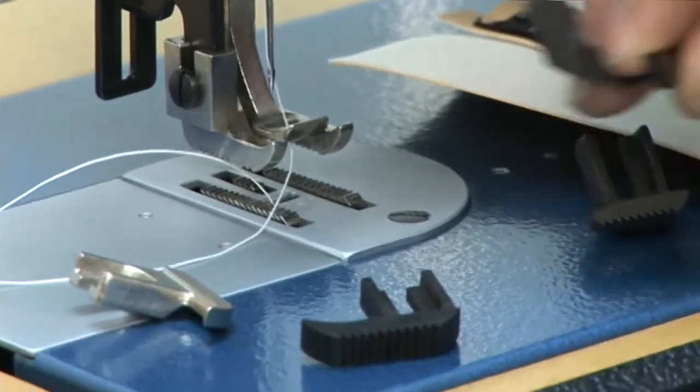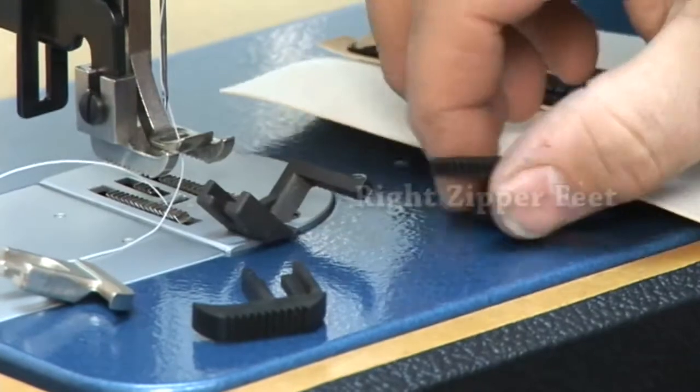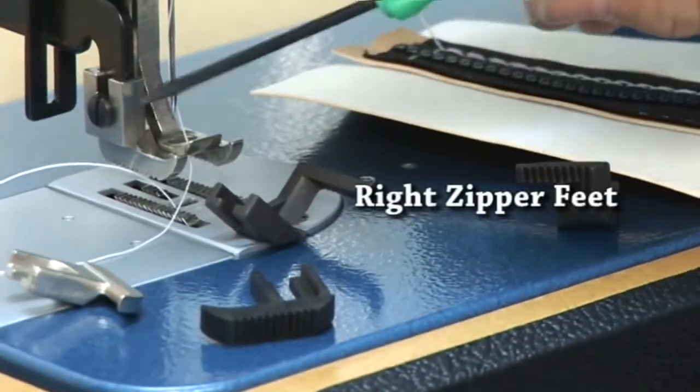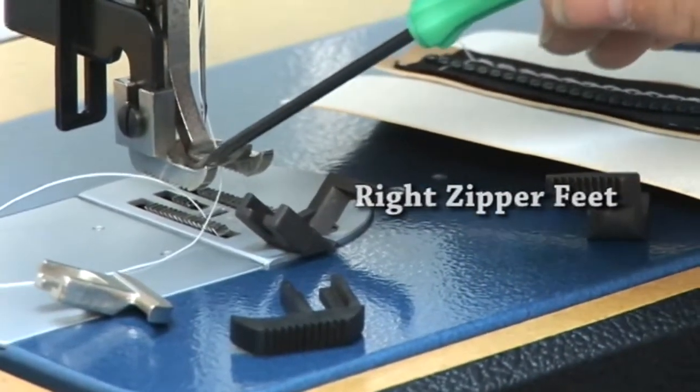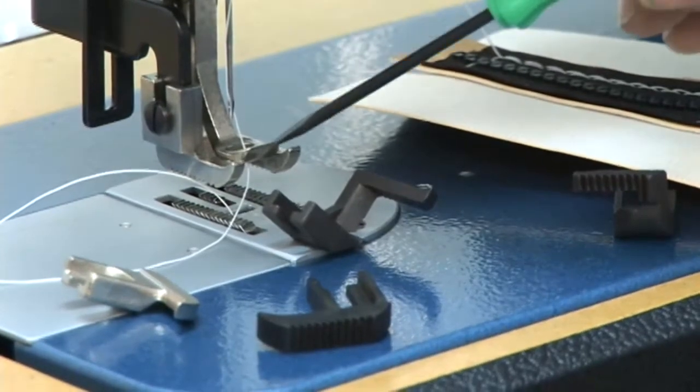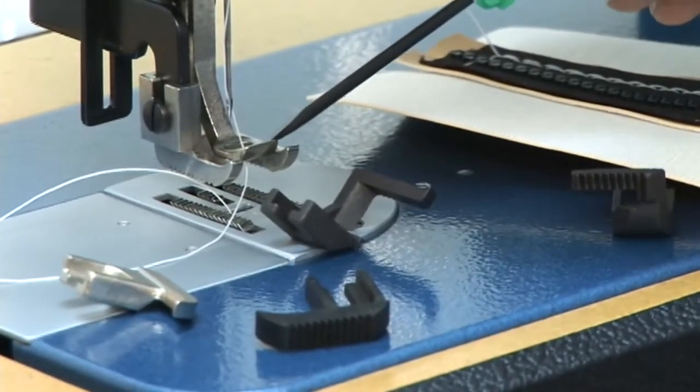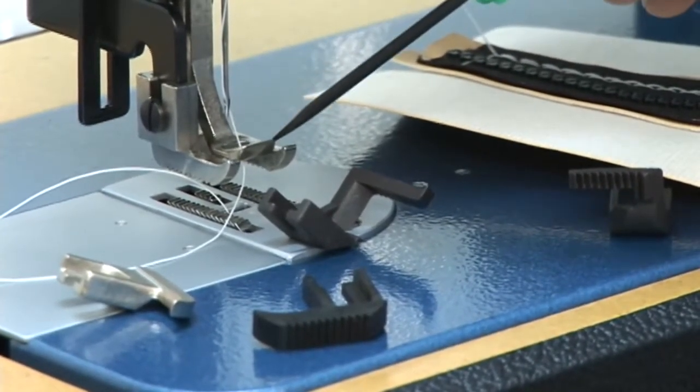Alternatively, you could go to a right zipper foot right here. This one when it's installed on the machine, this particular toe is removed and the only toe that would still exist on the walking foot is the one on the right side of the center foot.